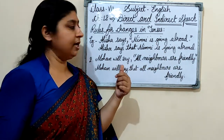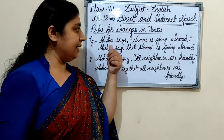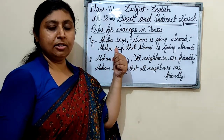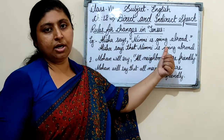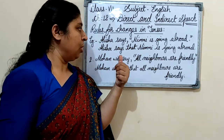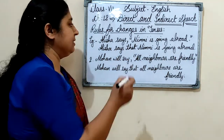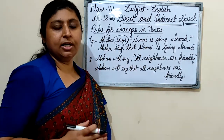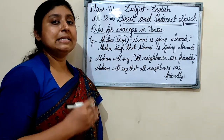We will take this example: 'Alicia says, Nimmi is going abroad.' This sentence is in direct speech, where the speaker's exact words — 'Nimmi is going abroad' — are in inverted commas. Here the reporting verb is 'says.' 'Says' is in simple present tense. So as per the rule, if reporting verb is present or future tense, no tense change occurs in the reported speech.